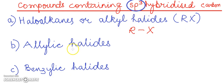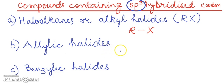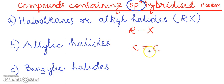Next we have the allylic halides. In the allylic halides, the halogen is bonded to the sp3 hybridized carbon atom next to a carbon-carbon double bond. This means we have a compound with a carbon-carbon double bond, and to this we have a methylene group with a halogen atom attached.